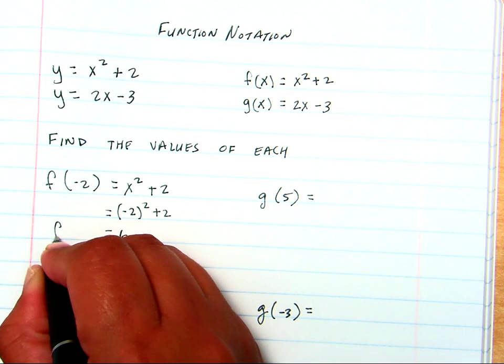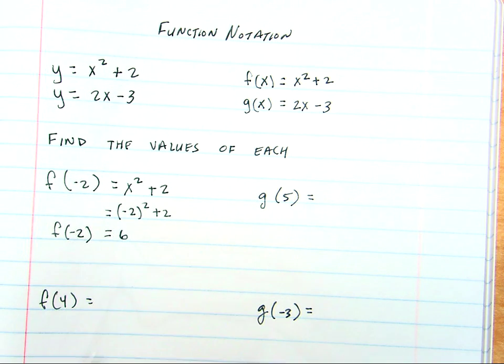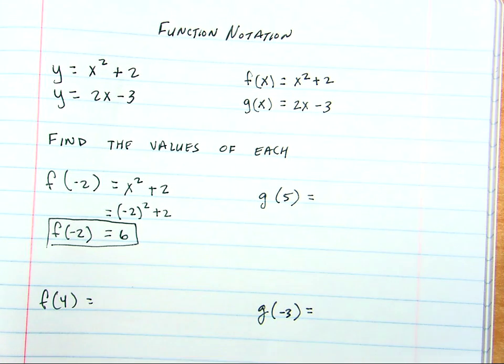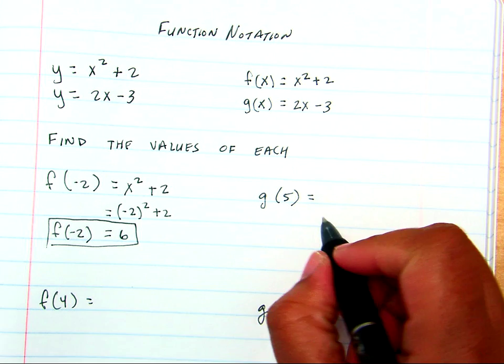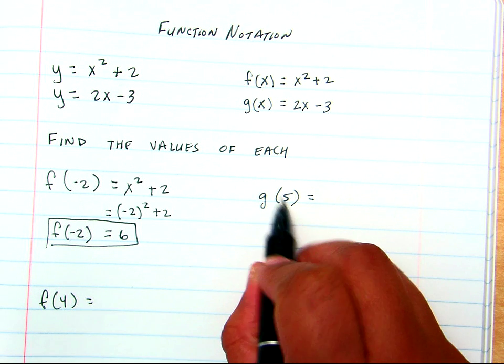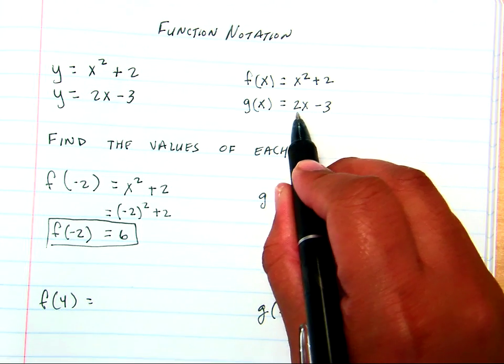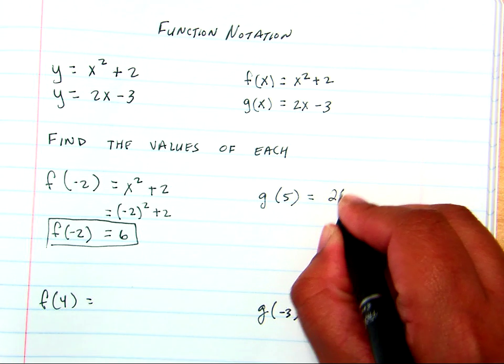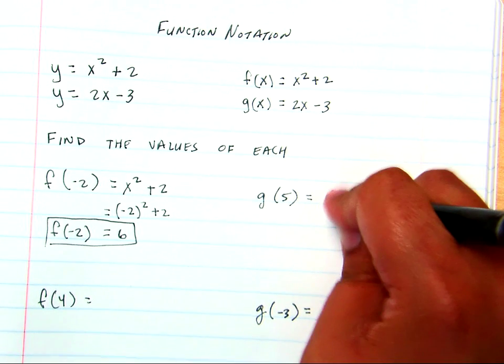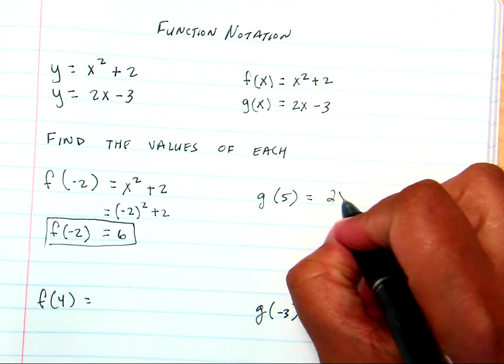So, we would say f of negative 2 is equal to 6. Now, on this one, this says g of 5. So, which one had the g? Well, g was 2x minus 3.